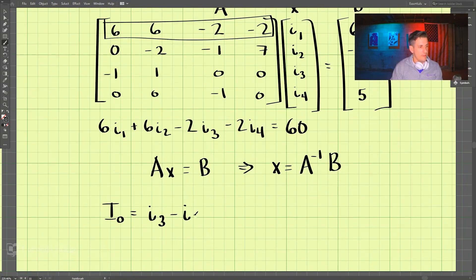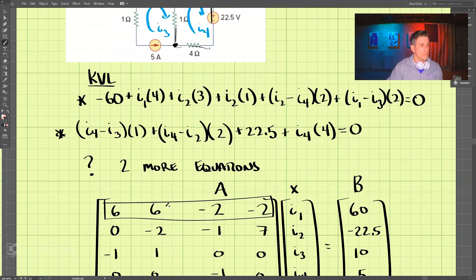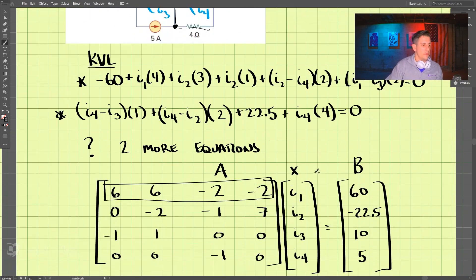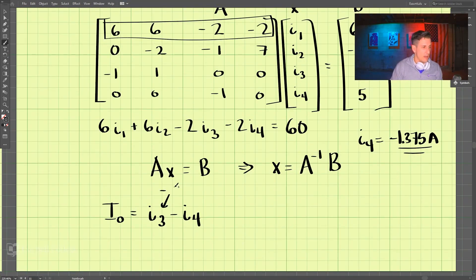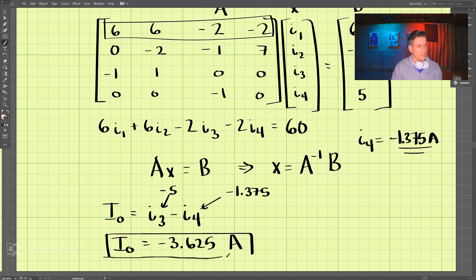I3 minus I4. And solving these equations, we have I4 is negative 1.375 amps and I3 is negative 5. So we have negative 5 minus this negative 1.375, so I0 comes out to be negative 3.625 amps, and that is our solution to this problem.